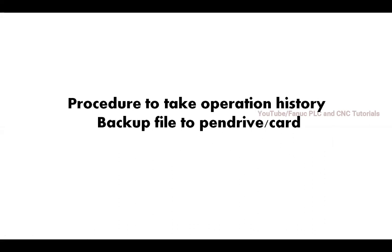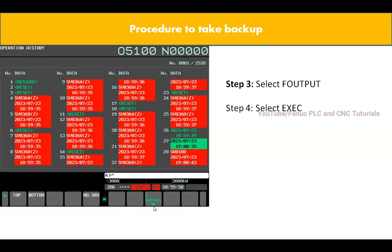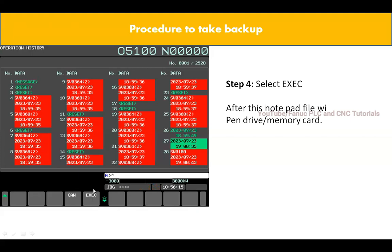The procedure: simply insert a memory card or pen drive on your machine, then press OPRT. When you press OPRT, you will get an option like 'F Output' — click on that. When you click on this, select Execute, and after executing you will get a notepad file saved into the memory card or pen drive.